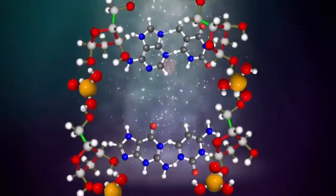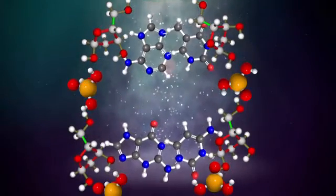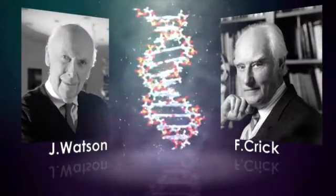The phosphorous and sugar molecules make the rails of the ladder, and the base pairs make the rungs. The double helix model was suggested by scientists James Watson and Francis Crick in 1953, and it earned them a Nobel Prize.